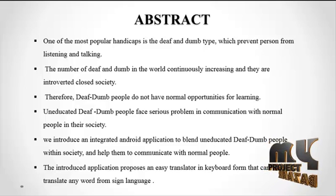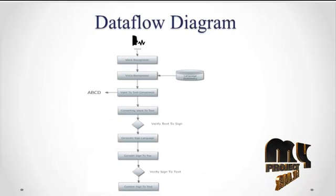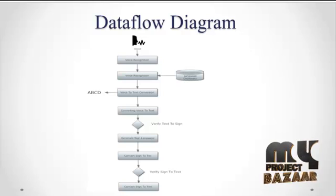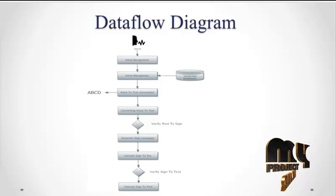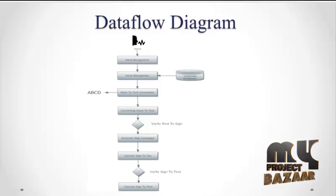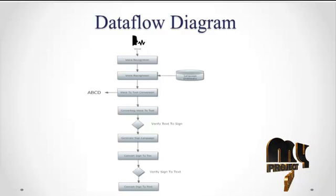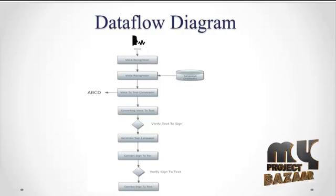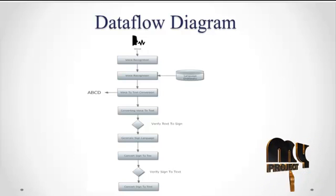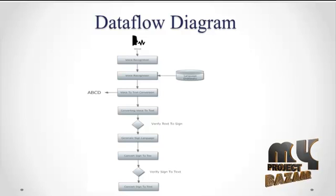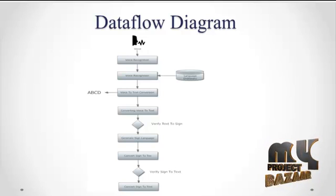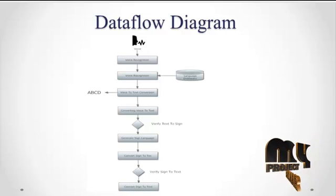Let's see our data flow diagram. Here we input voice to the smartphone device. After inputting the voice, the voice recognition module processes it. The voice recognition module contains a language dictionary, and each and every language dictionary converts the voice into text.